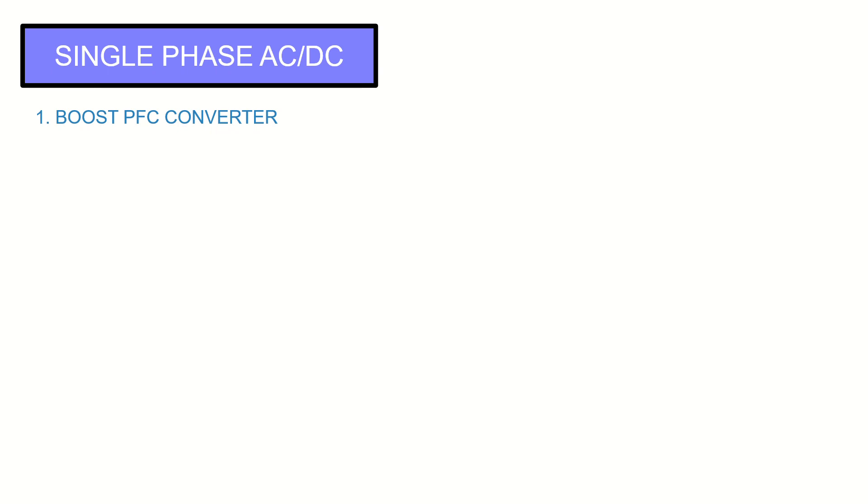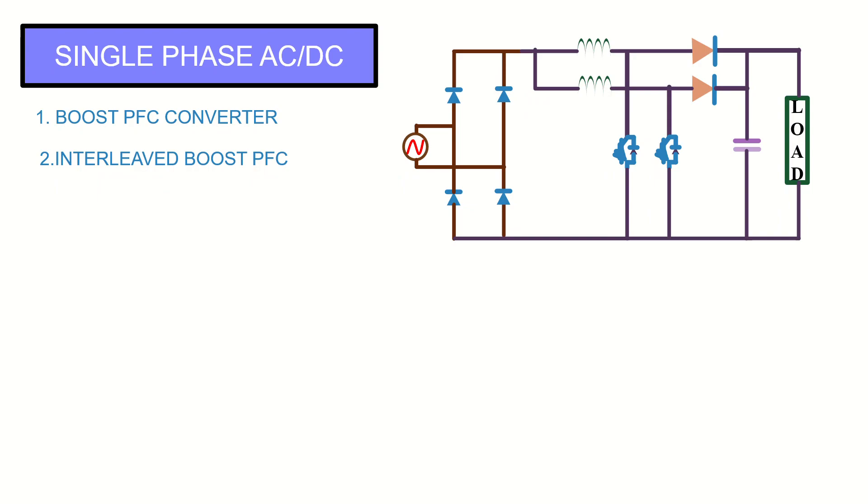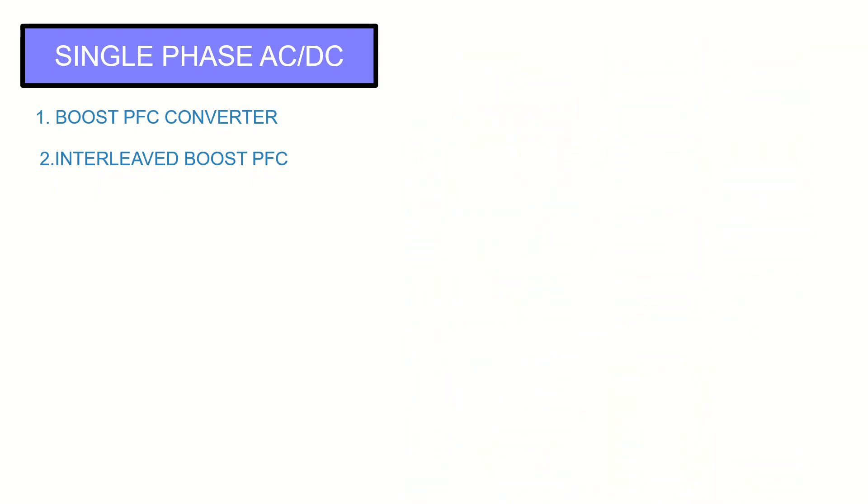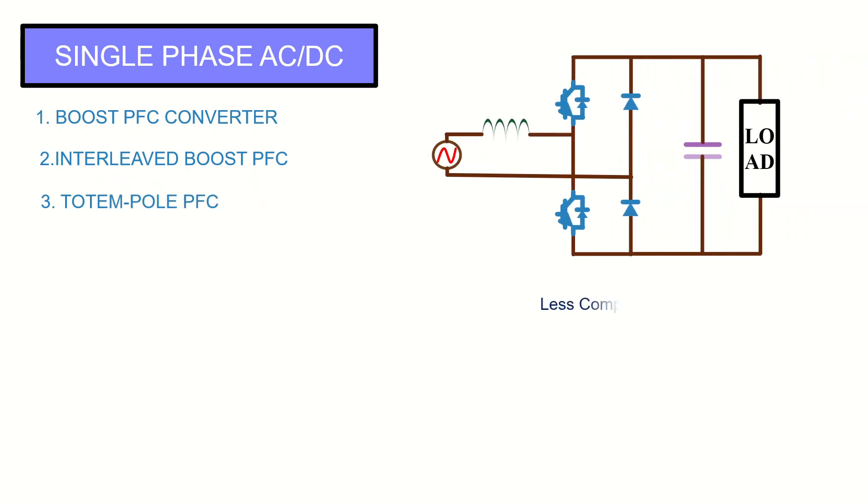If you still want to use the boost PFC converter, but for medium-power applications, then interleaved boost PFC converter is a good choice. This circuit still has all the major drawbacks mentioned for boost PFC converter. To overcome the drawbacks mentioned for boost PFC, totem pole PFC converter can be used. The number of components is less for this circuit compared to boost PFC. Also, absence of the diode bridge in the circuit makes the efficiency very high. The circuit also has bi-directional capability, which helps in vehicle-to-grid operation.